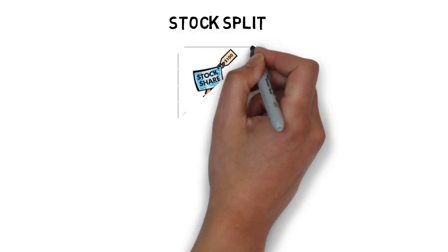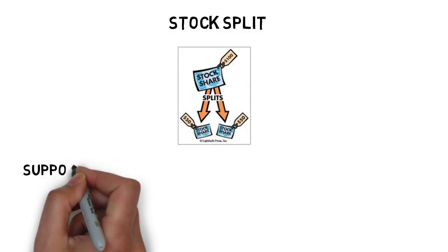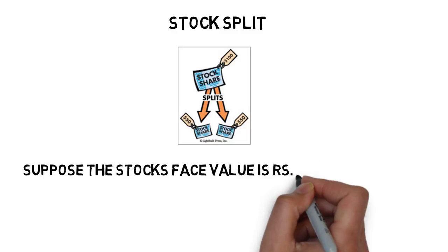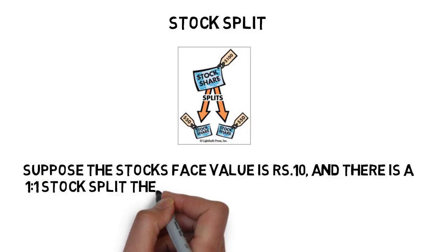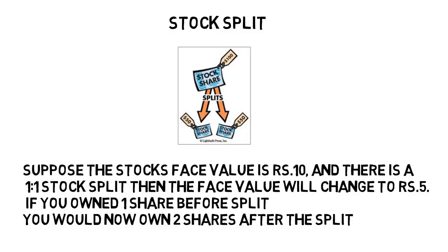Third is stock split. The stock is split with reference to the face value. Suppose the stock face value is 10 rupees and there is a 1:1 stock split — then the face value will change to 5 rupees. If you own 1 share before the split, you will own 2 shares after the split. It is similar to a bonus issue, aimed at encouraging retail participation and reducing the share price.